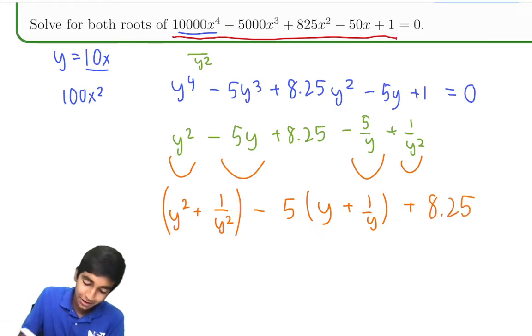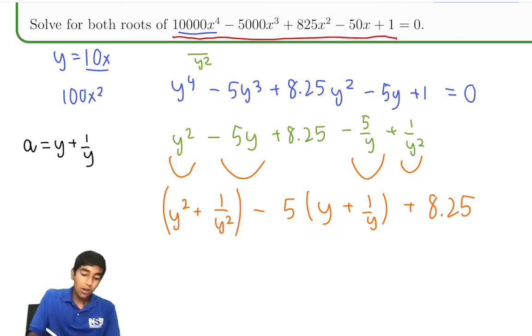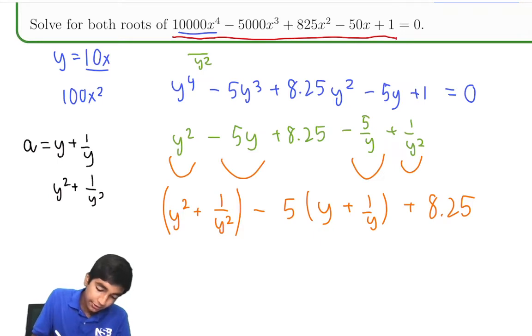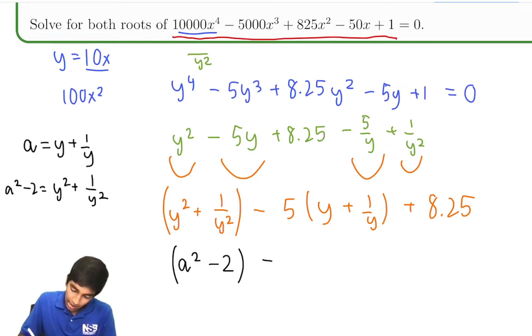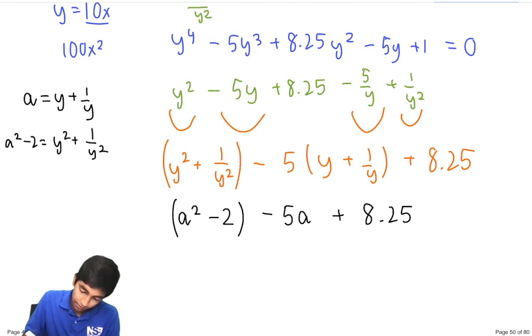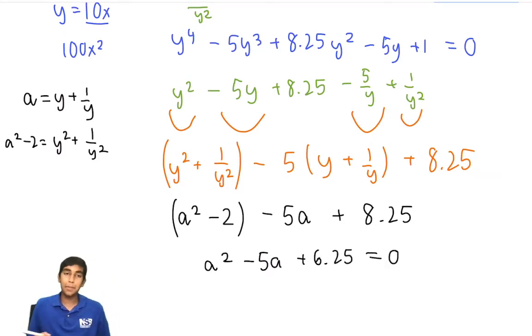We know what to do from here. We make the substitution. Let's say a = y + 1/y. Then y² + 1/y² is just a² - 2. We learned that earlier because if we square it and expand it, we end up with an extra 2y(1/y) term. So we can rewrite this in terms of a: a² - 2 - 5a + 8.25. Now, let's simplify. We have a² - 5a + 6.25 = 0. Aha! This looks like a binomial. (a - 2.5)² because 2.5² is just 6.25. And the only solution here is 2.5.